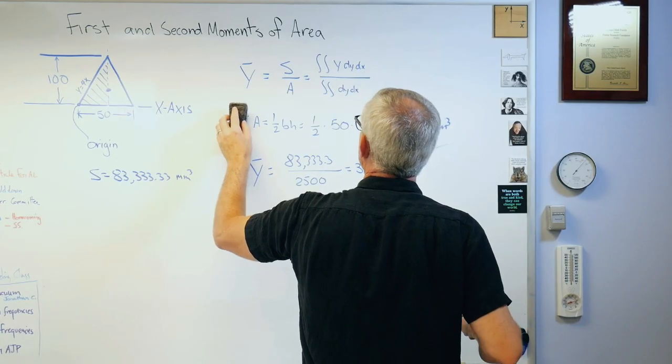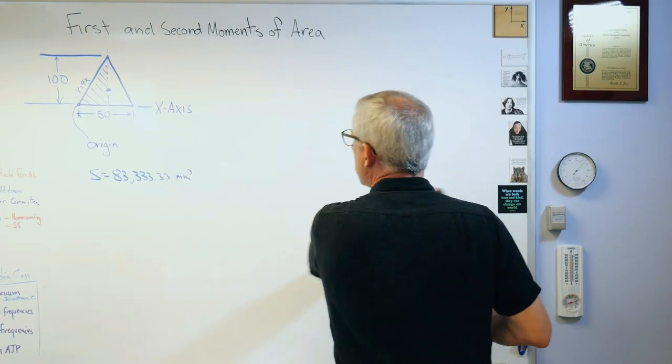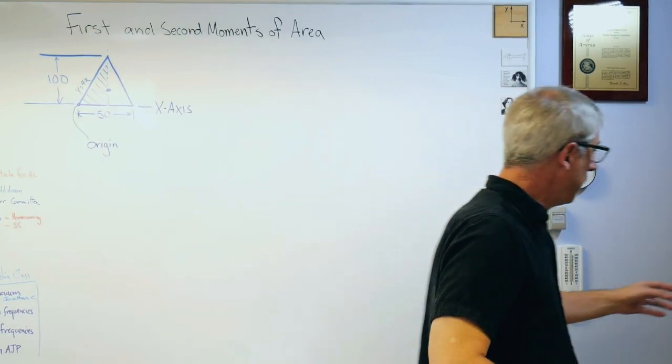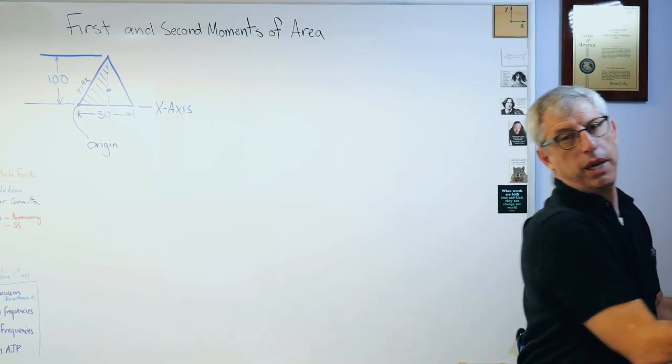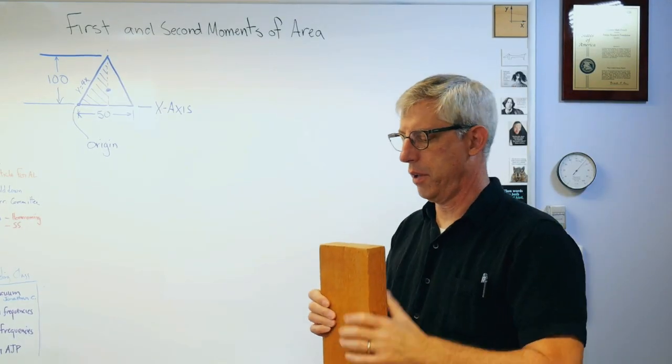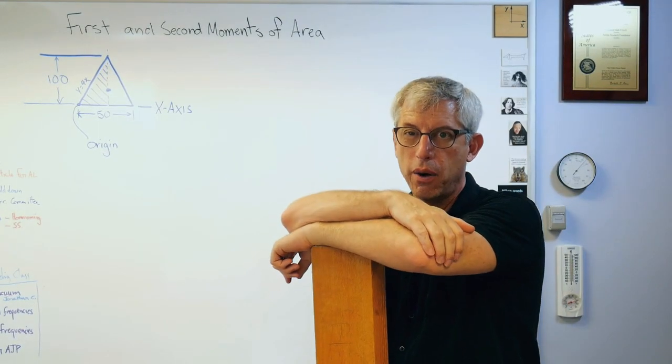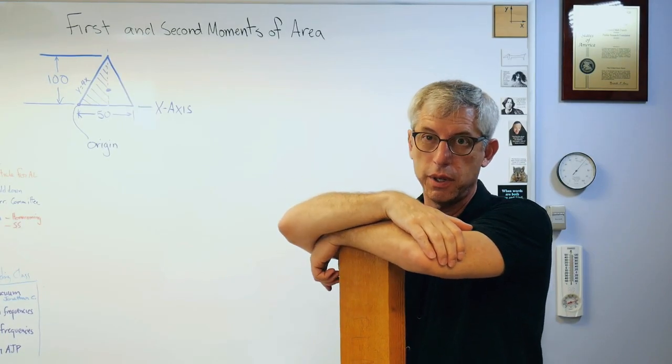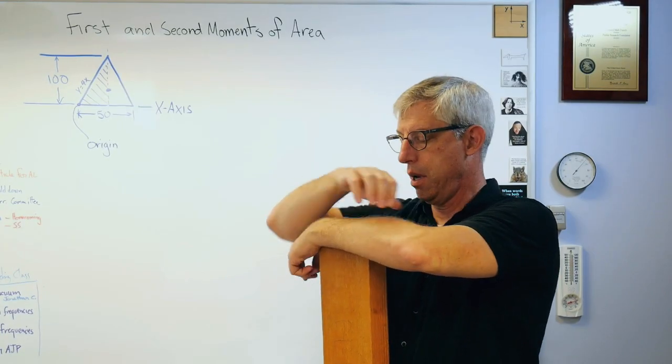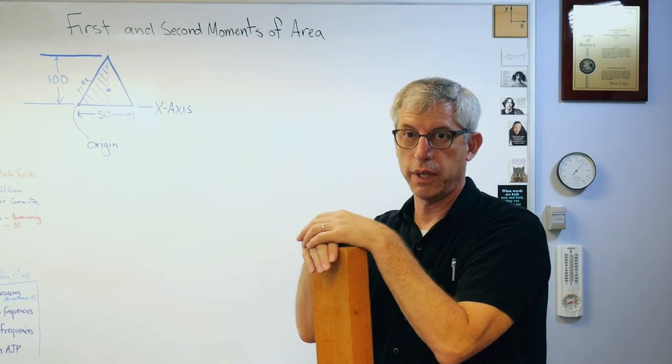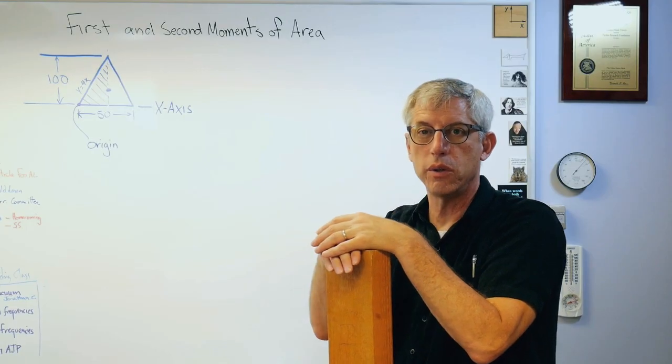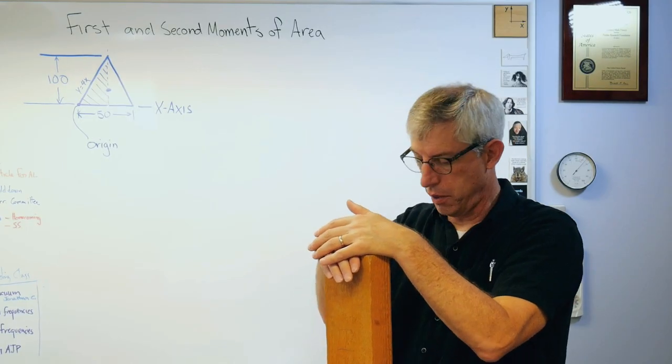Let's talk about second moment of area. Second moment of area is in the mechanics world what we call area moment of inertia. And we care about it because area moment of inertia tells us about the stiffness of things like beams. Now beams have two kinds of stiffness. They have stiffness due to the material, which is the elastic modulus, and stiffness due to the shape, which is the area moment of inertia.